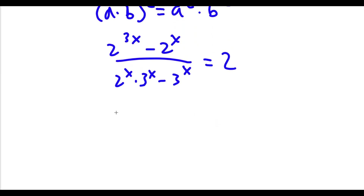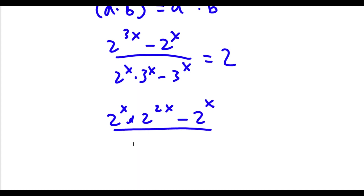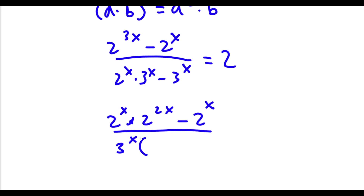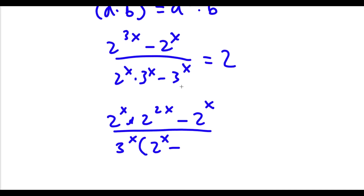Now 2 to the power of 3x I'm going to rewrite as 2 to the power of x times 2 to the power of 2x. So I have this minus 2 to the power of x, and this is going to be divided by — now I can factor out 3 to the power of x — and I have 3 to the power of x times 2 to the power of x times 2 to the power of x divided by 3 to the power of x is simply 2 to the power of x minus — now 3 to the power of x divided by 3 to the power of x is 1 — and this is equal to 2.